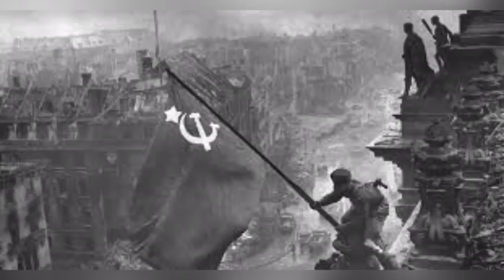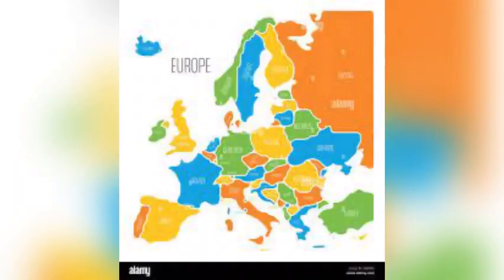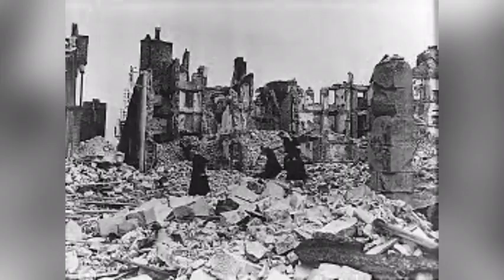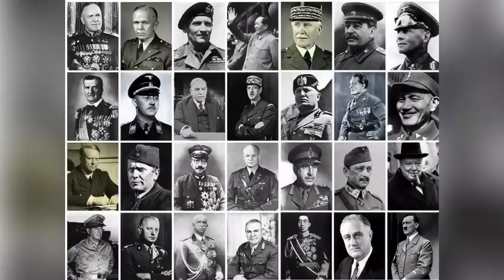World War II lasted from 1939 to 1945, and it involved many of the world's nations, including the major powers of the time. The Allies were led by the United States, Great Britain, and the Soviet Union, and the Axis was led by Germany, Italy, and Japan.